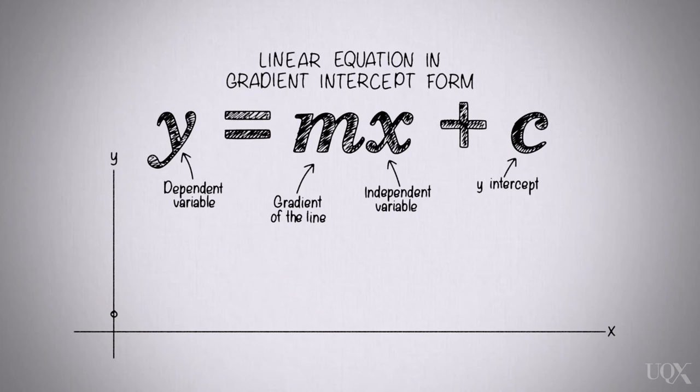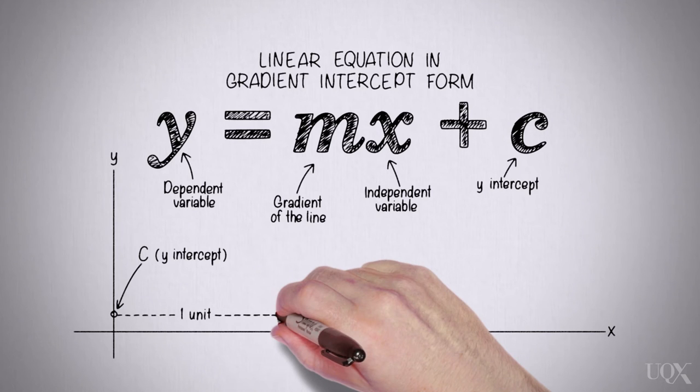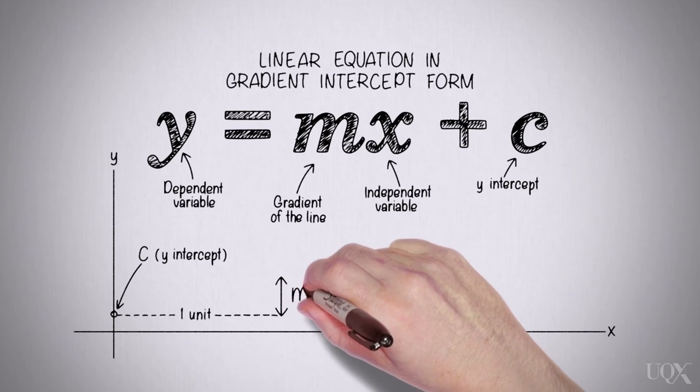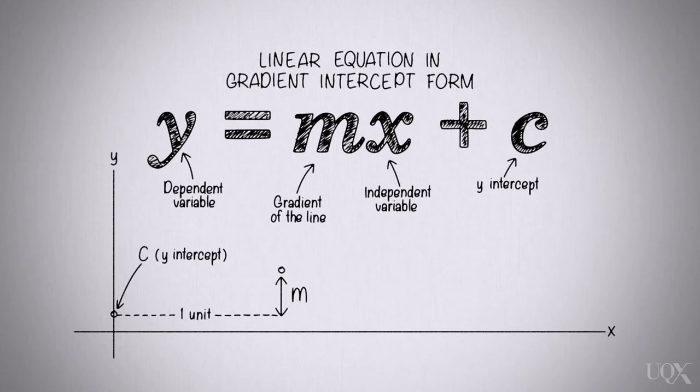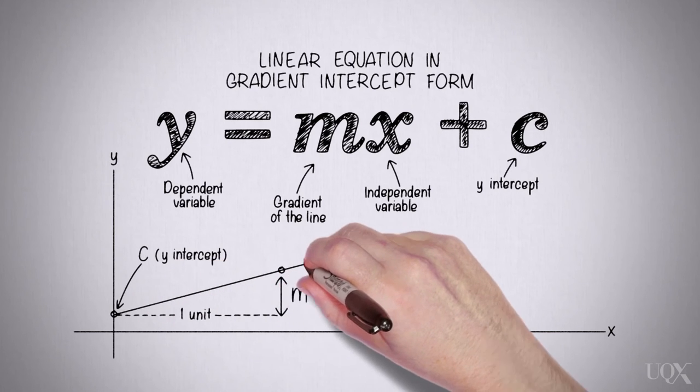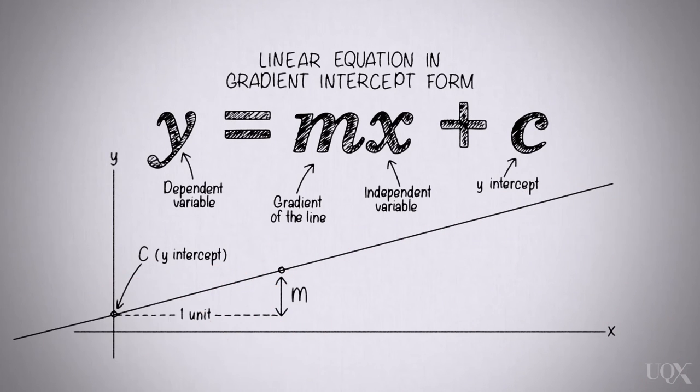Mark the coordinates for the intercept x is 0, y is c in general. To find another point, go across by one unit, then up or down by m units to mark a second point. Join these points and continue the line over the whole graph.